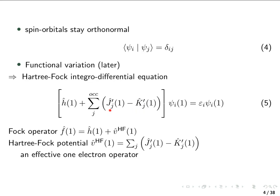The operator in the parenthesis is called the Fock operator. It consists of this core Hamiltonian and what we call the Hartree-Fock potential — which is just the sum over the Coulomb and exchange operators. This operator depends only on the position of electron one, so it's an effective one-electron operator. The Hartree-Fock potential is an effective one-electron operator describing the average interaction with all the other electrons.